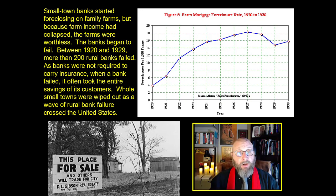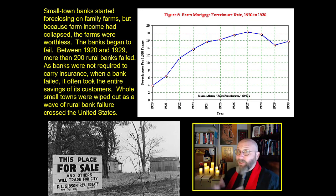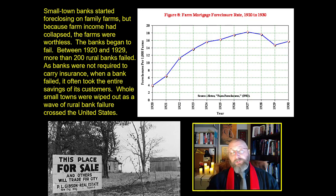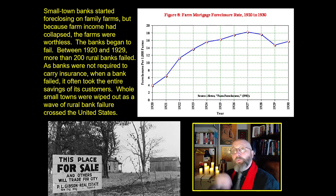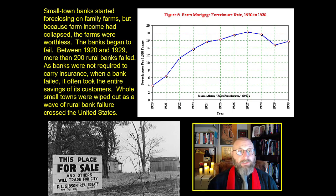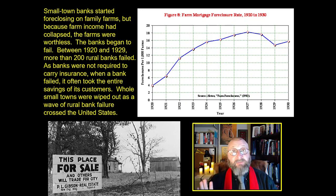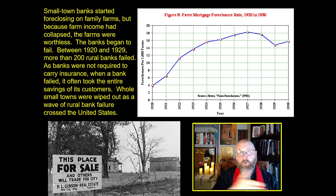The price of corn fell by 63% in 1920-1921. The price of wheat fell by 52%. Farming incomes collapsed by two-thirds. But so many small farms owed money to their local banks. This is how a farming crisis started to become a banking crisis, as small-town banks began foreclosing on family farms. The rate of farm mortgage foreclosures went up and up. When banks foreclosed on these farms, nobody wanted to buy them — so all these small banks got saddled with worthless farm after worthless farm and started to fail. Between 1920 and 1929, more than 200 rural banks went out of business. Because banks at the time were not required to carry insurance, when a bank collapsed it took the life savings of every one of its customers with it, potentially wiping out entire small towns.